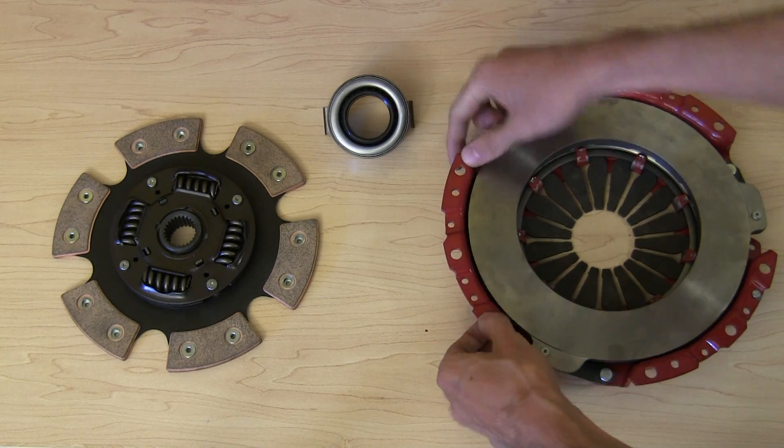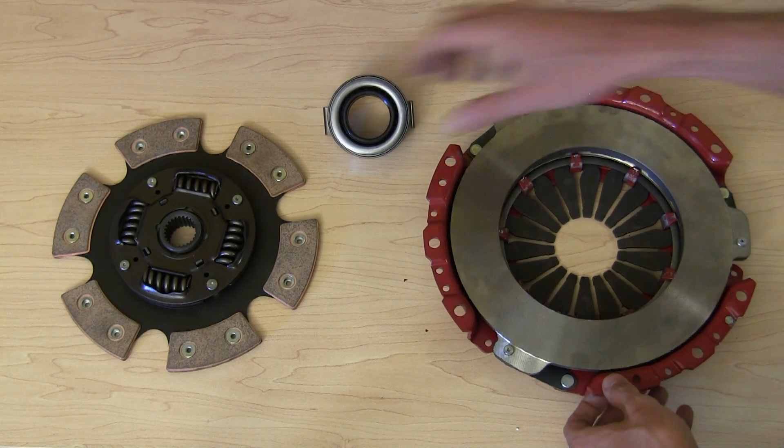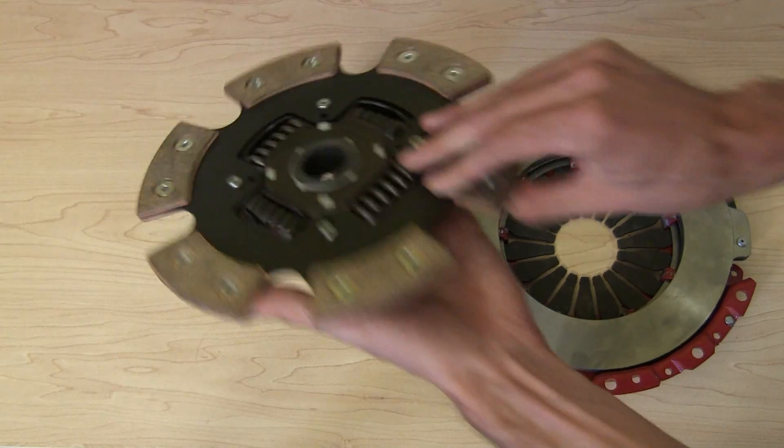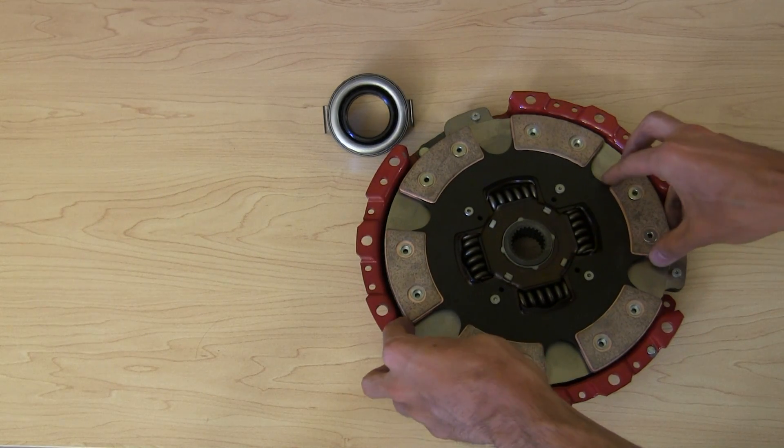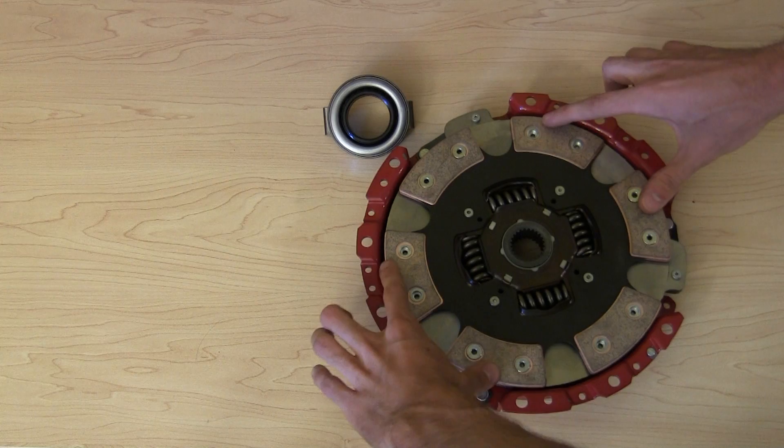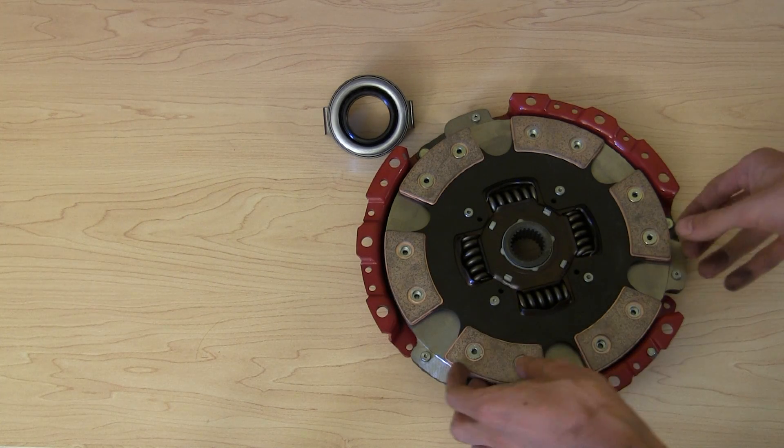So this will be, these holes here are basically where this is going to connect to the flywheel. And then inside here you'll have the clutch disc and that's what this will ultimately be pressing up against and pressing this against the flywheel in order to transfer torque.